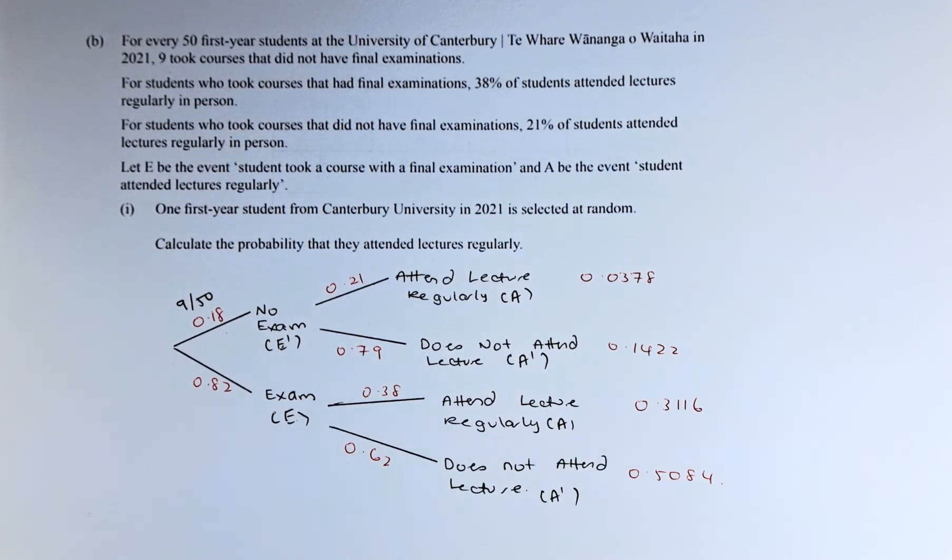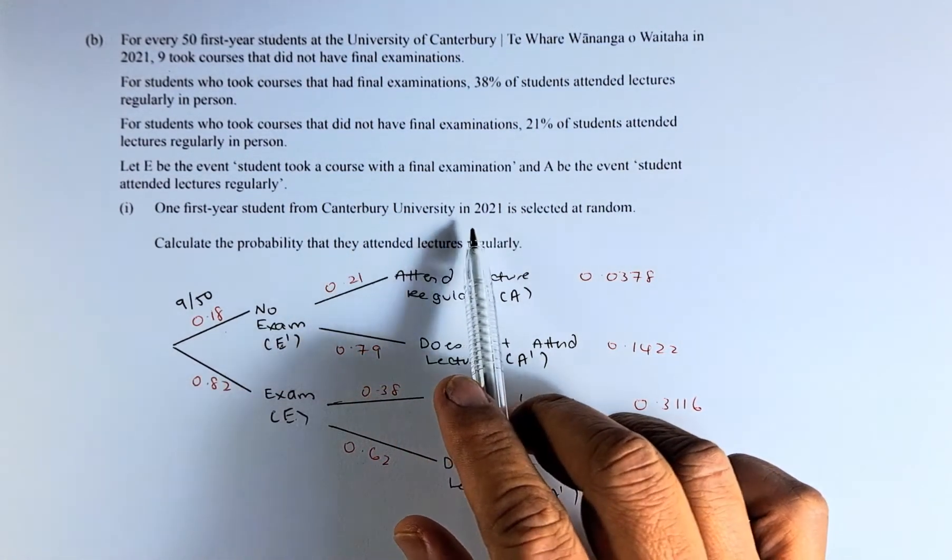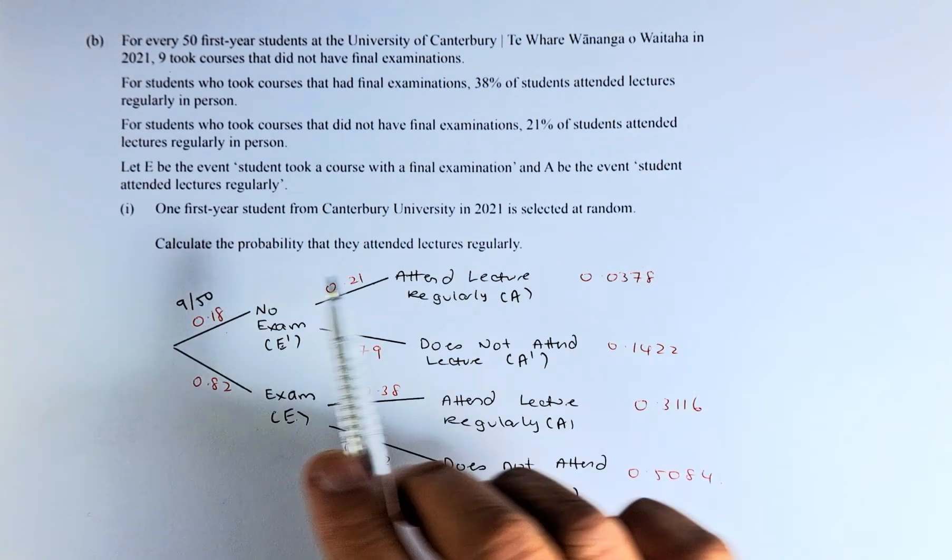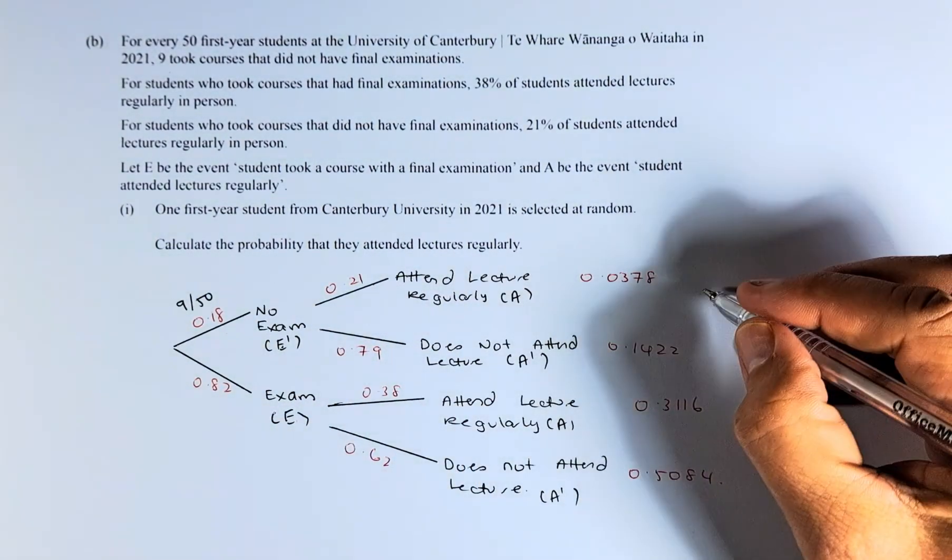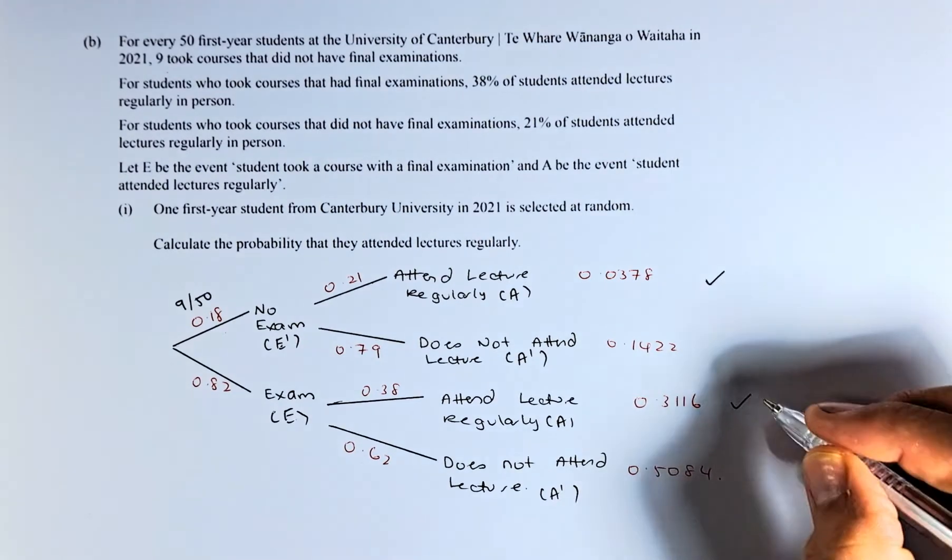Once we have that, we can start to answer the question. One first year student from Canterbury University is selected at random. Calculate the probability that they attended lectures regularly. So, it could be here or it could be here.